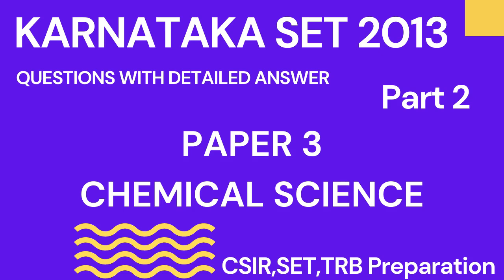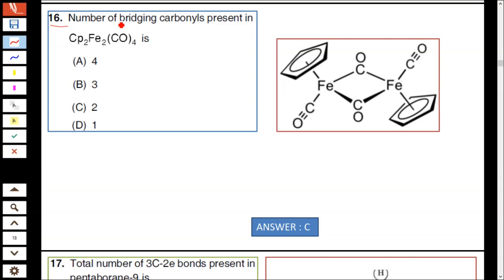Welcome to Diagnostic YouTube channel. Karnataka SET 2013 Part 2 Paper 3. Question number 16: Number of bridging carbonyls present in Cp₂Fe₂(CO)₄. First you have to know the structure of this complex. Fe is coordinated with two terminal carbonyls and two bridging carbonyls.